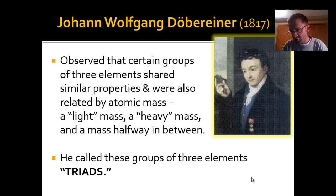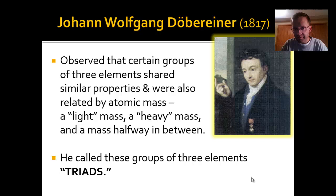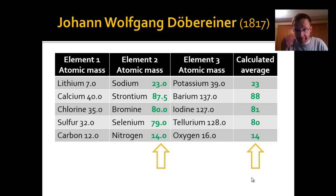One of the first developers of some organizational structure is Johann Döbereiner, who lived in the early 1800s and is credited with something called triads. He observed that certain groups of three elements shared similar properties and were also related by their atomic masses — a light mass, a heavy mass, and an element with a mass halfway in between.